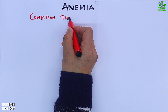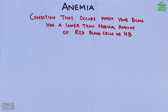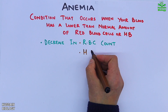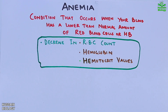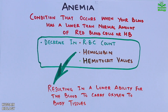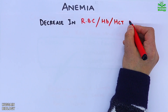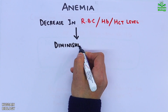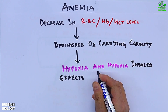Anemia is a condition that occurs when your blood has a lower than normal amount of red blood cells or hemoglobin. Briefly, it's a decrease in RBC count, hemoglobin, or hematocrit values. This decrease lowers the blood's ability to carry oxygen to body tissues, leading to diminished oxygen-carrying capacity, which in turn causes hypoxia and hypoxia-induced effects on organ function.